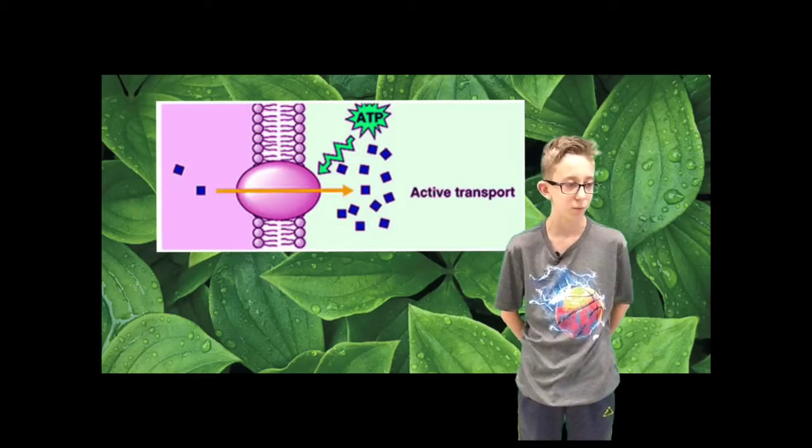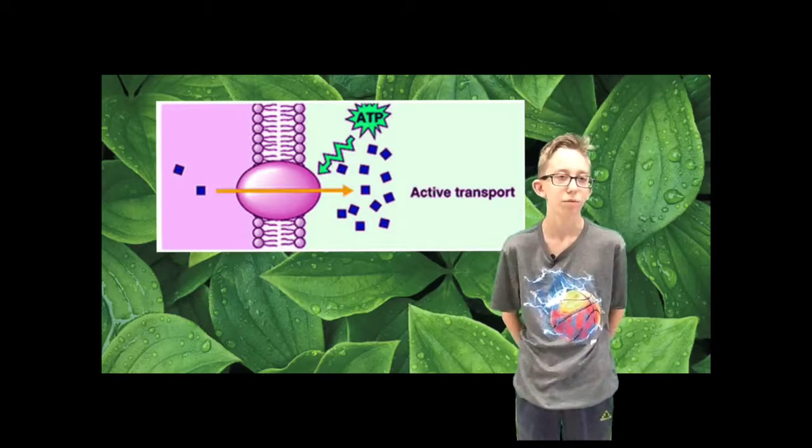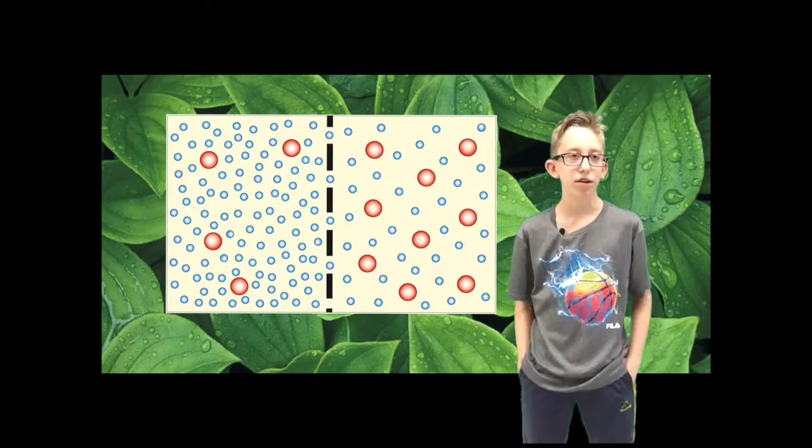The final way is to have the cell membrane engulf the particle. It then pinches off from the rest, connects, and forms a vacuole in the cell. Also, we'll be discussing passive transport.